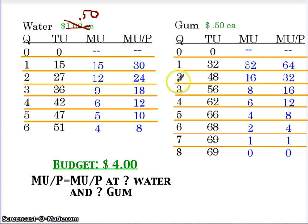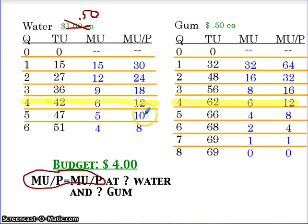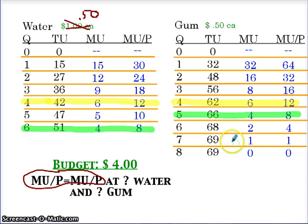We assess it like we did before — we want mu over p to equal mu over p. We need to find where that is true. At water 30, no 30 at gum. 24, no 24 at gum. 18, no 18 at gum. 12 — we do have 12 with gum. That would be 4 water, 4 gum. We also see that 8 does match up. So we see our second location: 6 water, 5 gum.